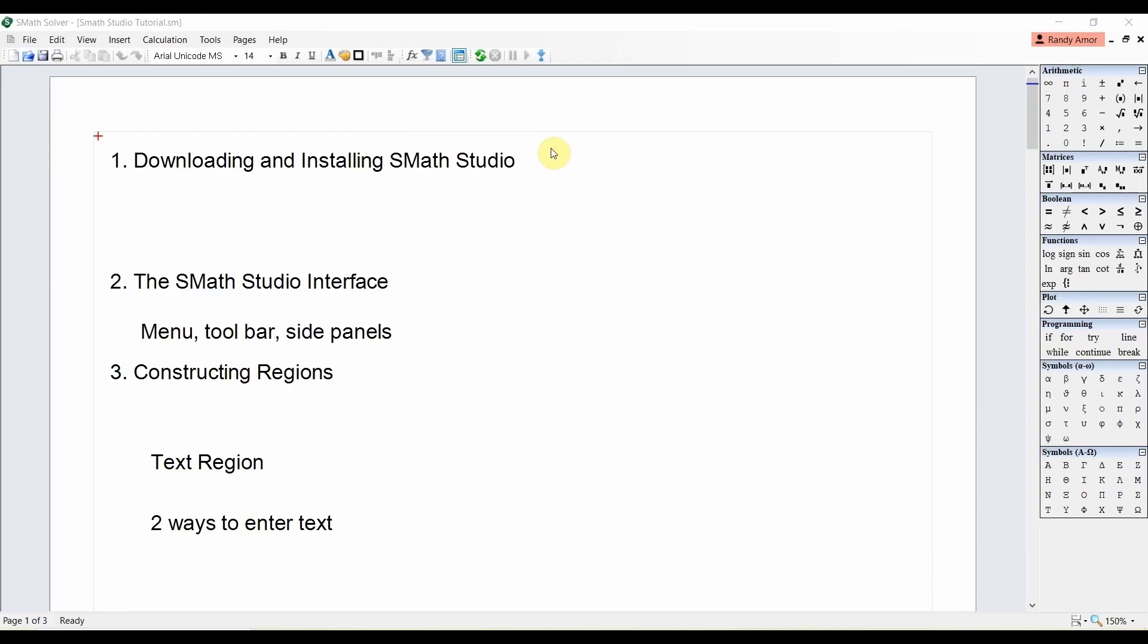There are two types of constructing regions in Smath Studio: the text region and the math region. The text region is used to enter text like sentences or descriptions. On the other hand, the math region is used for entering formulas or equations to perform calculations.